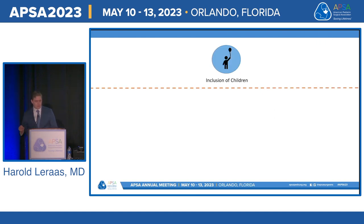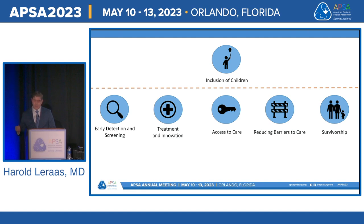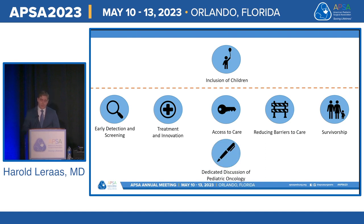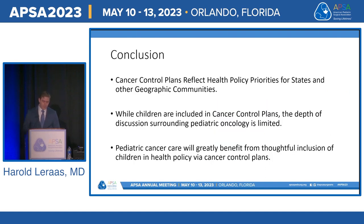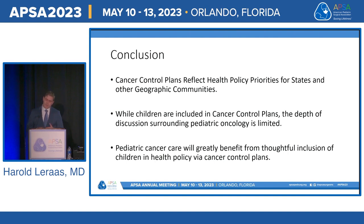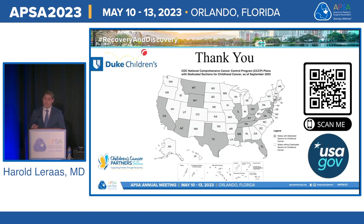At large, children are included in all cancer control plans. However, meaningful inclusion of pediatric cancer care to better detect cancer, provide care, improve access, reduce barriers, and support survivors is lacking. Only a minority of plans dedicate a specific section to pediatric cancer. The states are laboratories for American democracy, and the inclusion or perhaps absence of children is very meaningful. Expanding these plans to include children will benefit pediatric cancer care and may improve access and long-term outcomes.